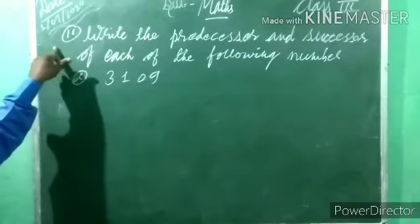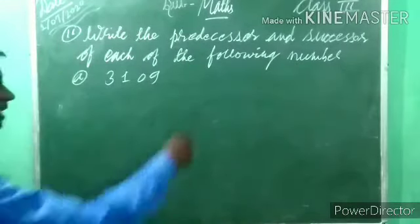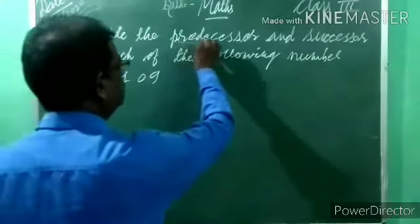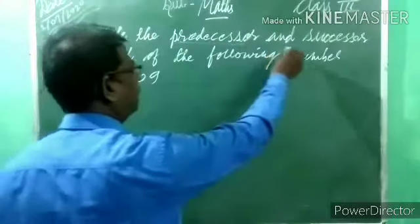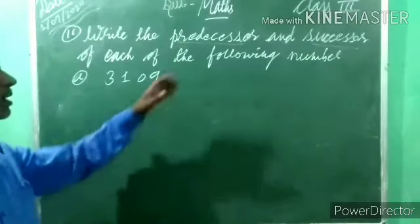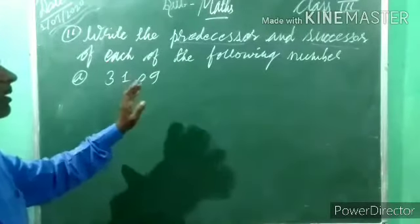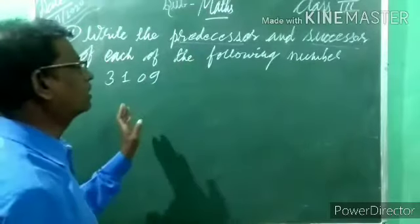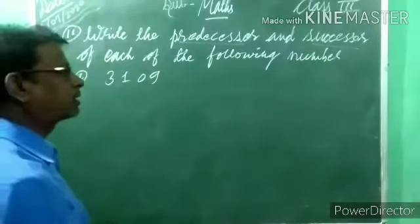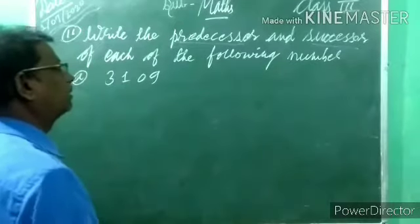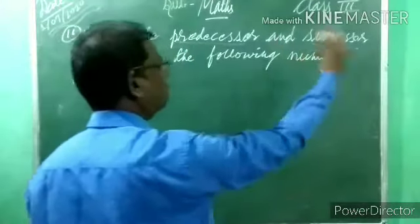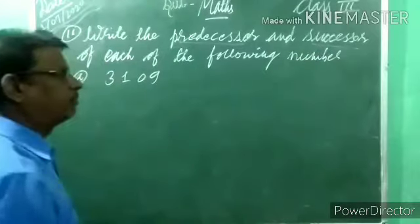Write the predecessor and successor of each of the following. What is asked? Predecessor and successor. Predecessor means the before number — whatever number is given, the number before it is called the predecessor. And successor means the next number, the after number. In Hindi, the predecessor means the 'pahelewala number' and the successor means the 'badwala number'.